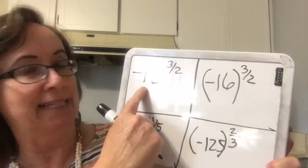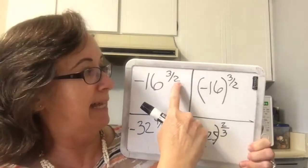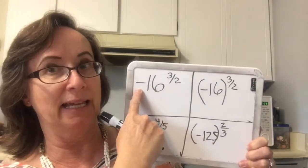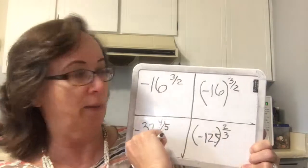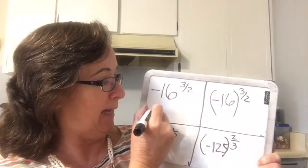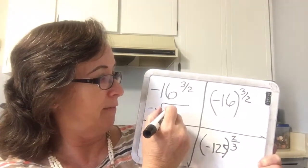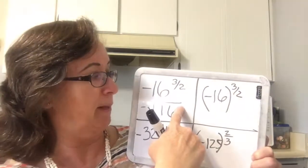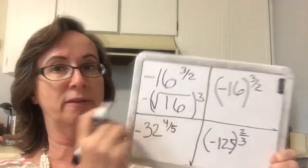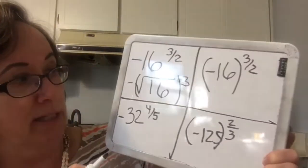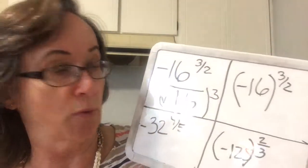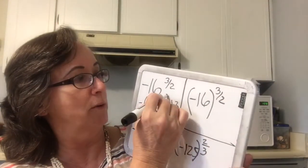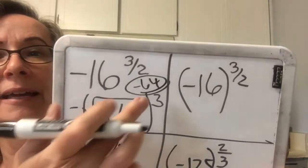Now we've got negative 16 to the 3/2, but since the root is 2 and it only applies to the 16, this is the same thing as negative 1 times 16 to the 3/2 — the square root of 16 to the 3rd. The square root of 16 is 4, 4 cubed is 64, and then I multiply by negative 1. So I get negative 64.